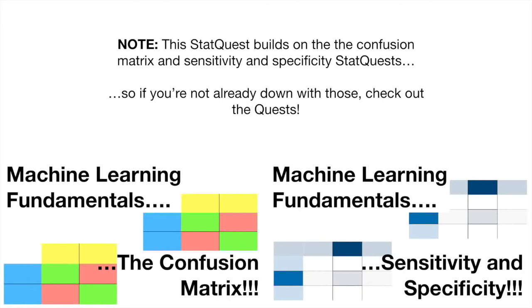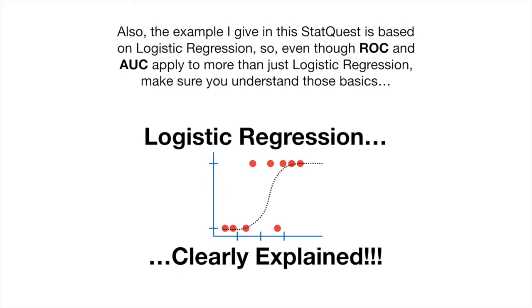Note: this StatQuest builds on the confusion matrix and sensitivity and specificity StatQuests, so if you're not already familiar with those, check out those quests. Also, the example I give in this StatQuest is based on logistic regression, so even though ROC and AUC apply to more than just logistic regression, make sure you understand those basics.